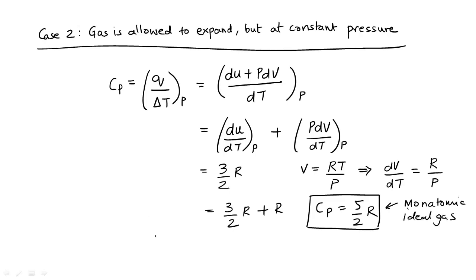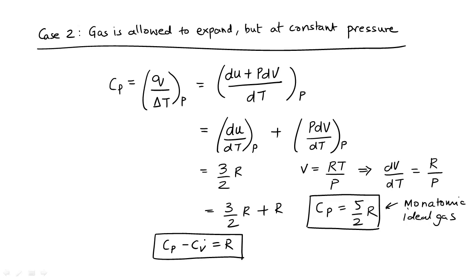We can see that the difference between Cp and Cv is equal to R. This expression happens to be true for all ideal gases, not just a monoatomic ideal gas, although the actual expressions for Cp and Cv are different for non-monoatomic gases.